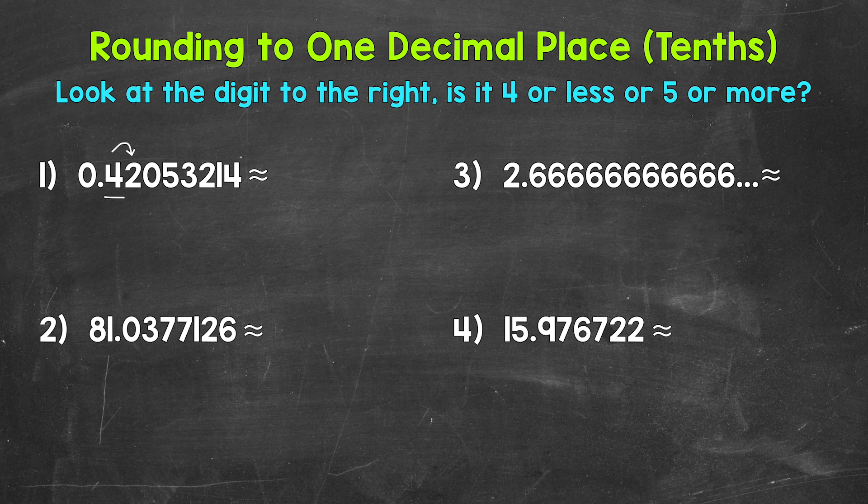We have a two to the right. That's four or less, so we keep the digit the same. Our original decimal rounds to four tenths.